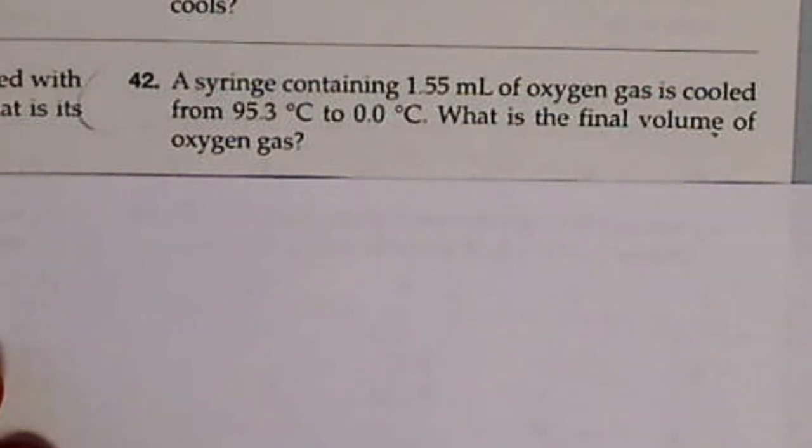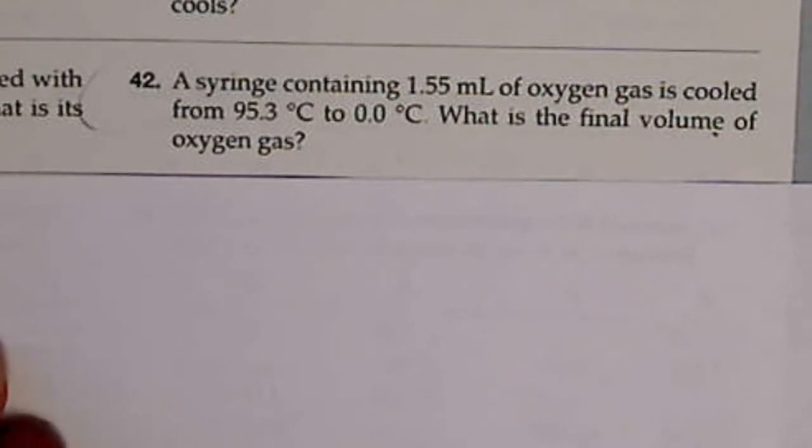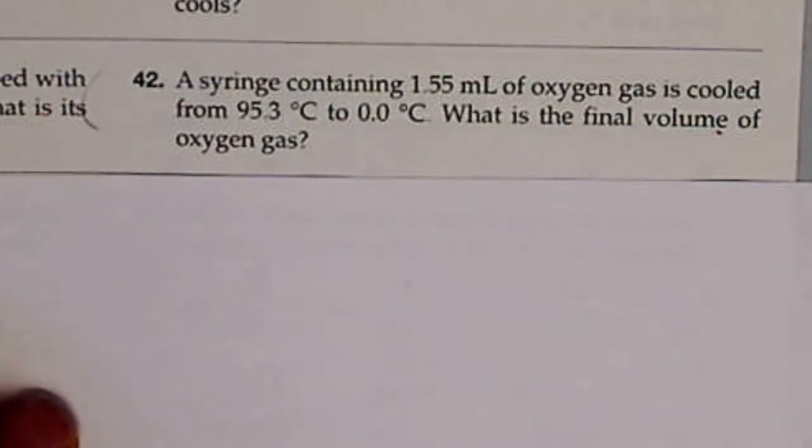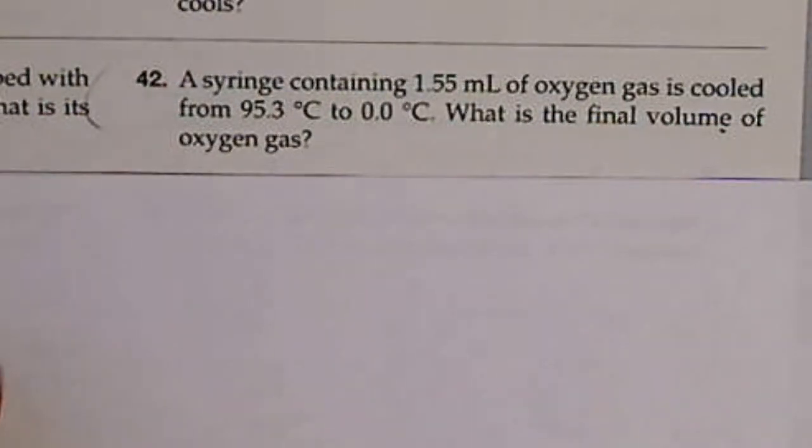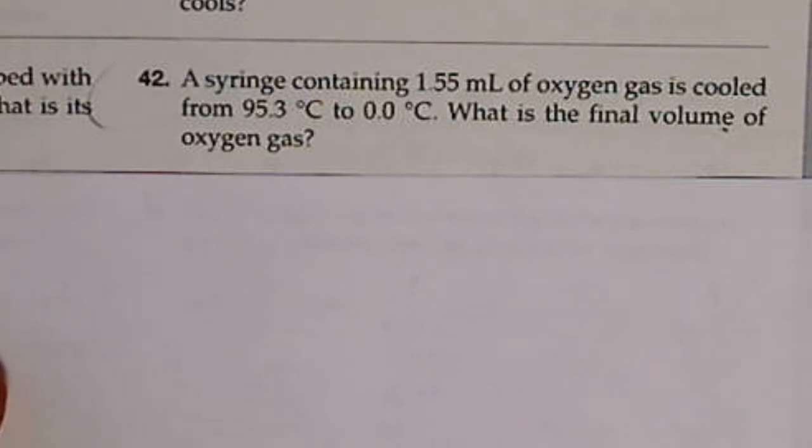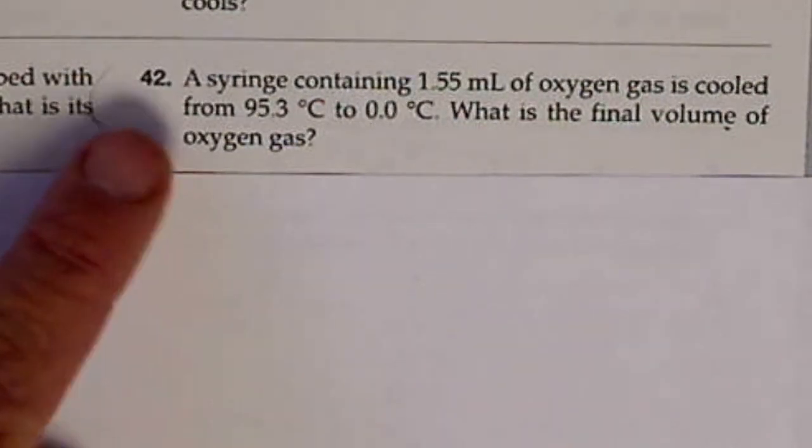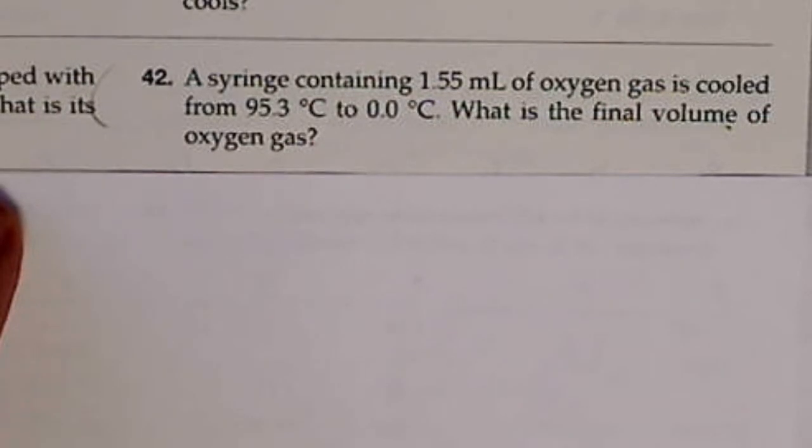This is problem 42 from your text in chapter 11, and we're going to decide which simple gas law to use and solve this problem. We're told that we have a syringe containing 1.55 milliliters of oxygen, and it's cooled from 95.3 Celsius down to 0 degrees Celsius, and the problem asks for the final volume.